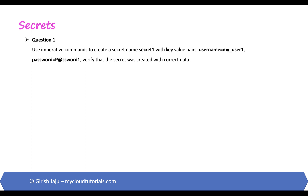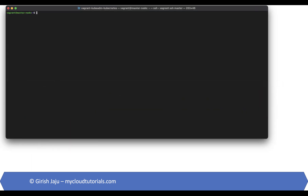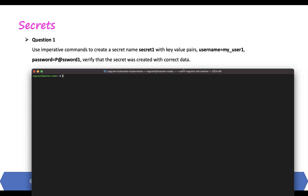Using imperative commands, create a secret named secret-one with key-value pairs username equals my-user-one and password equals password-one. Verify the secret was created with correct data. Let's get to our command line and create the secret.